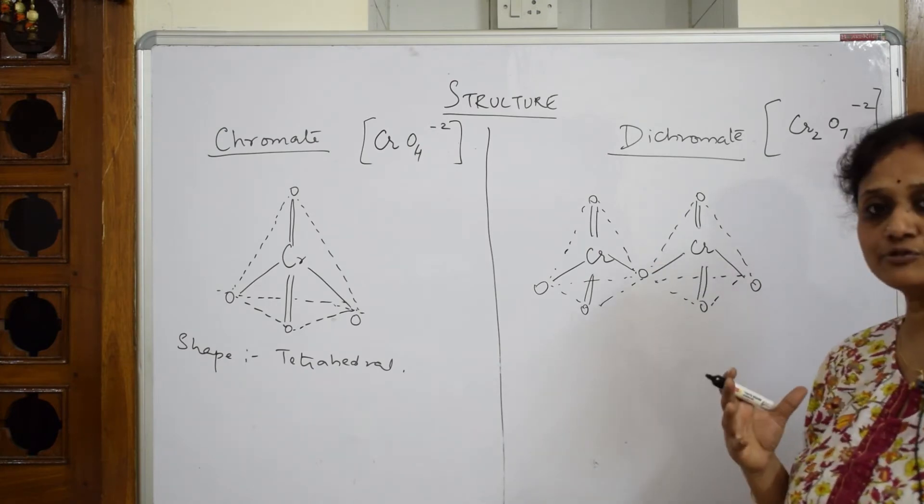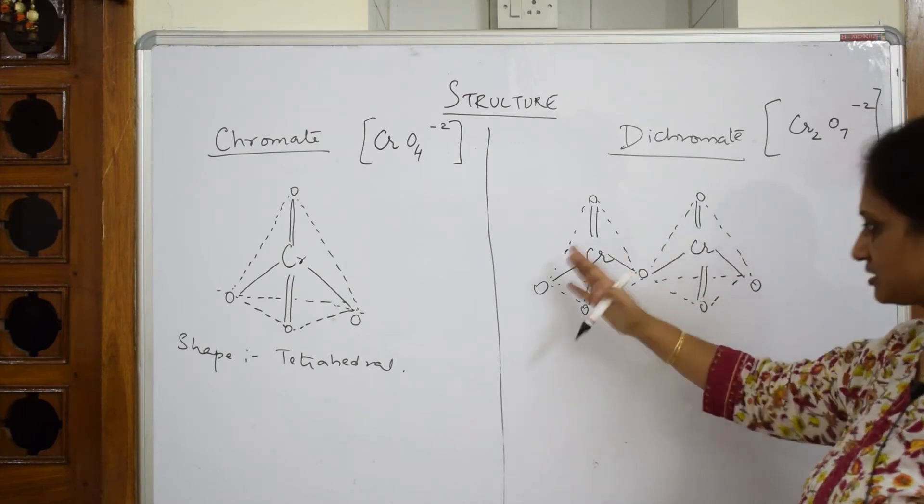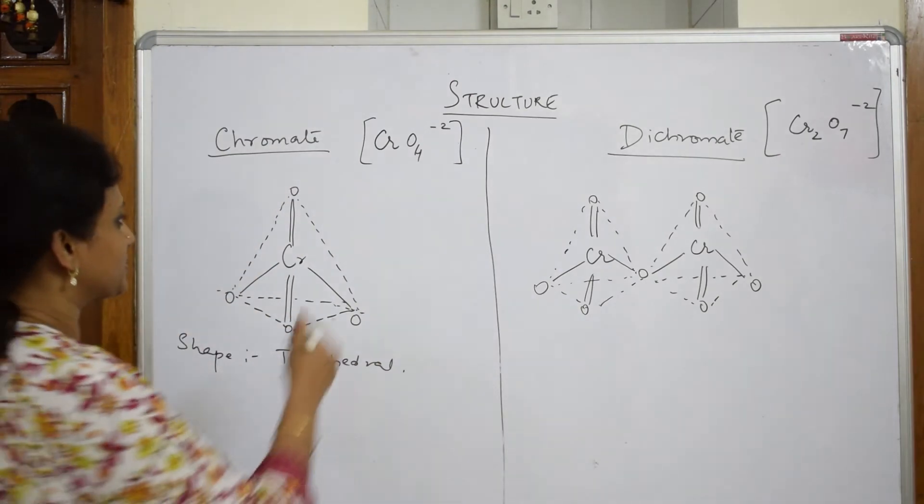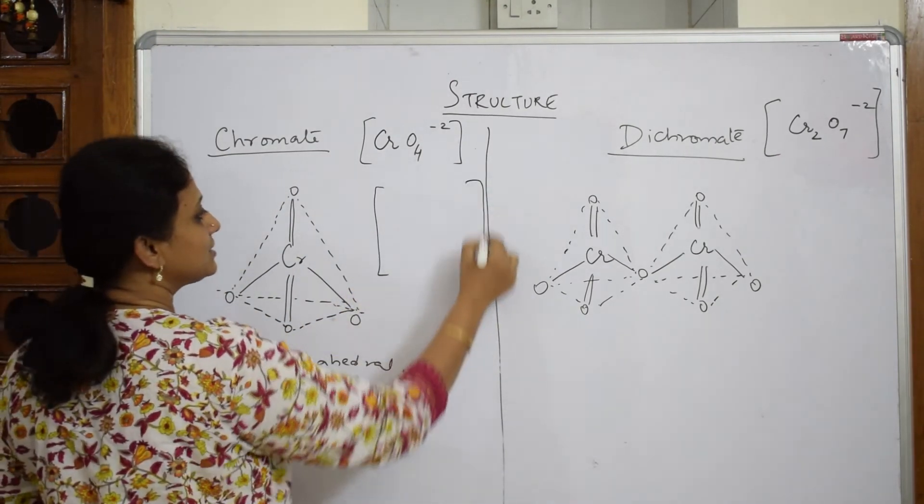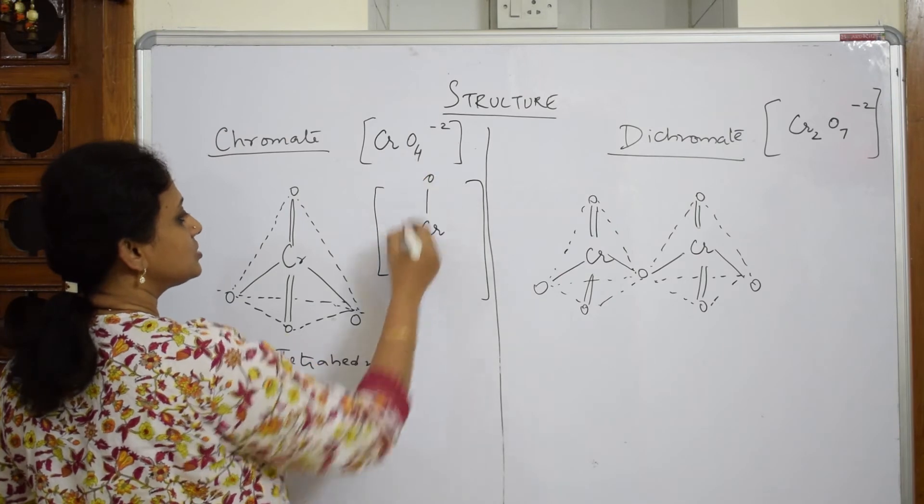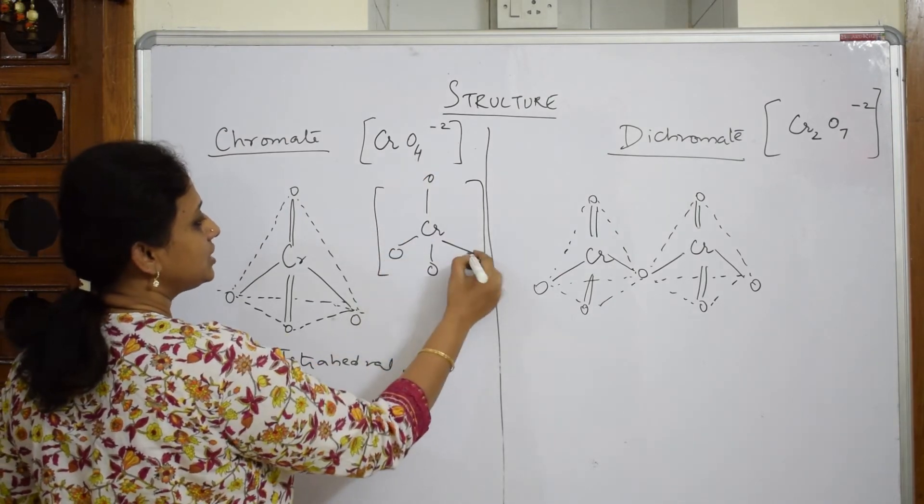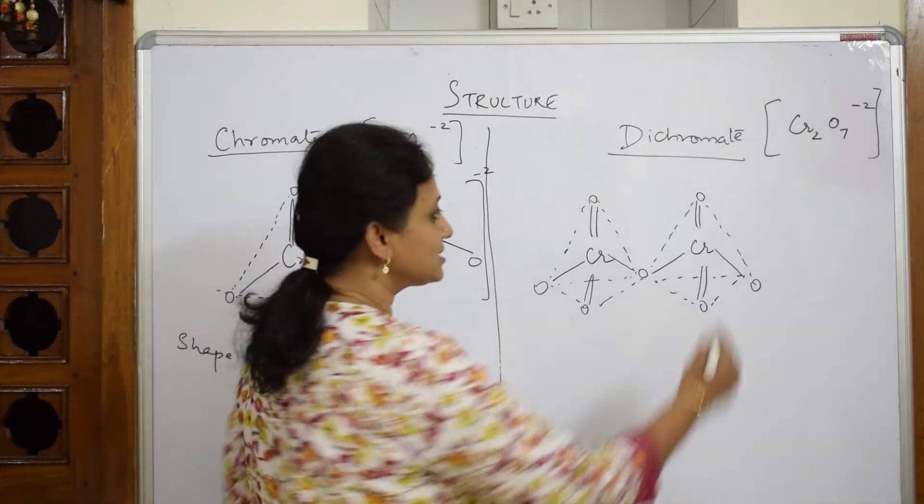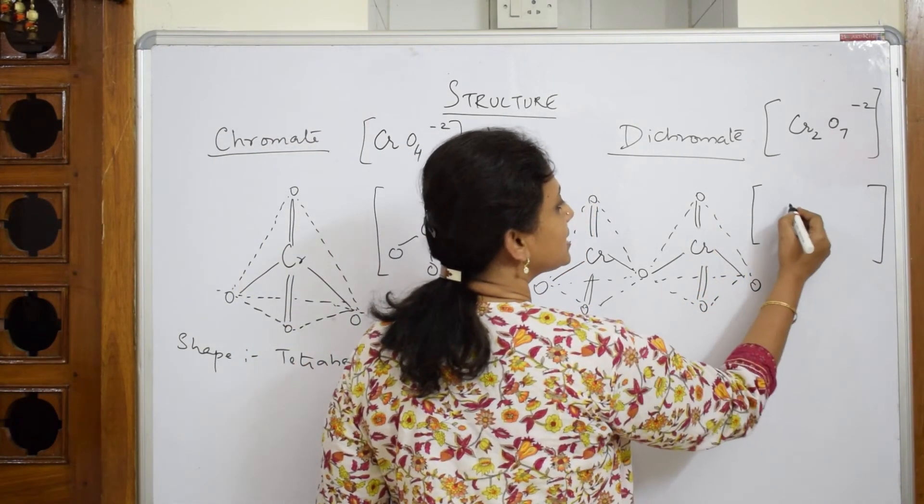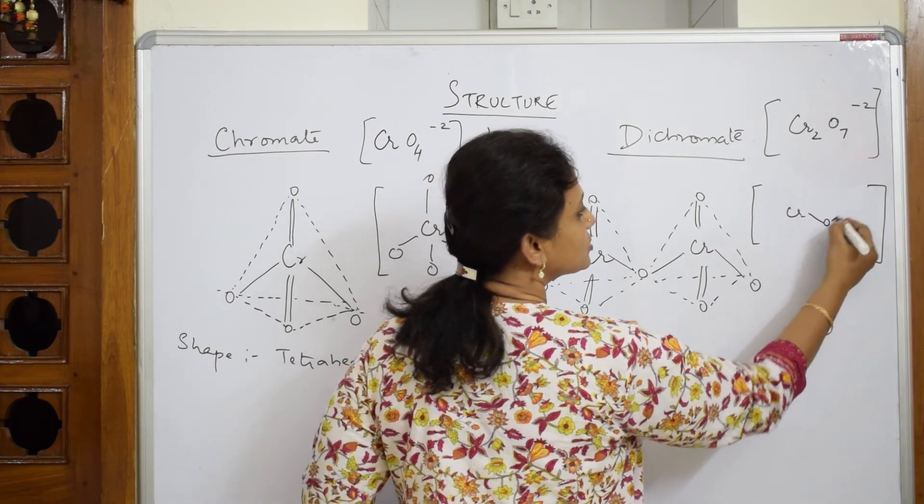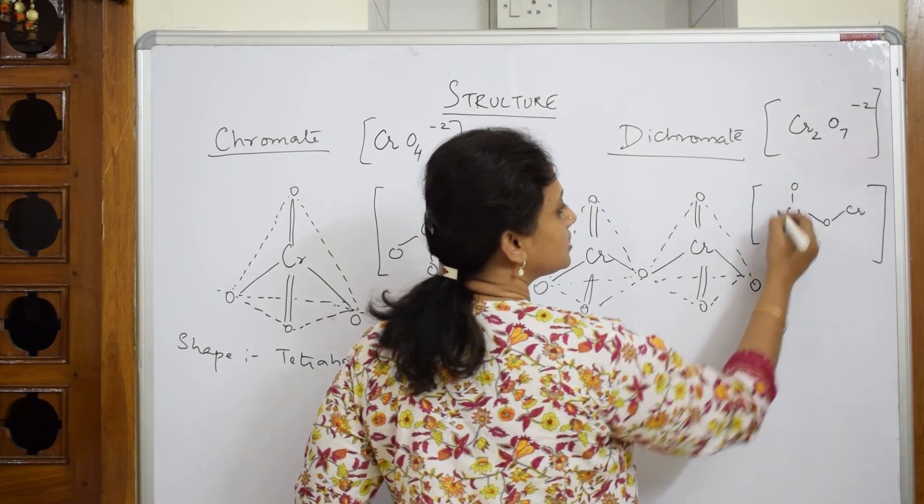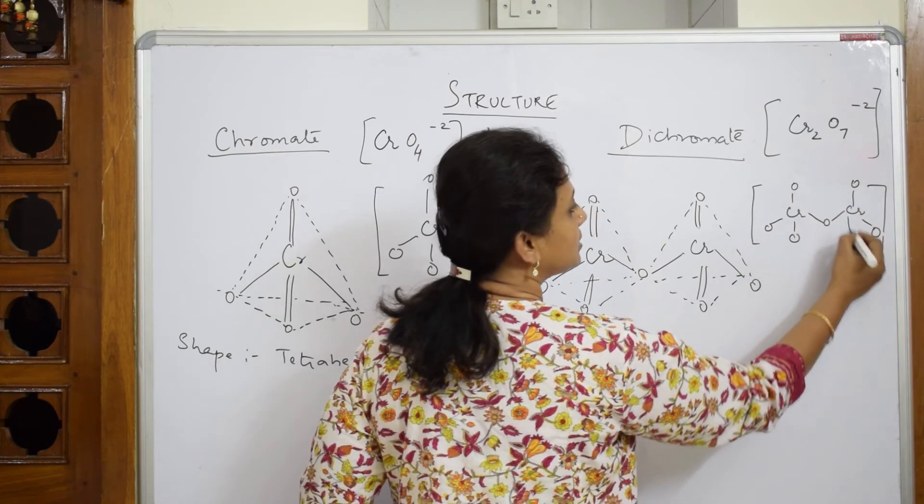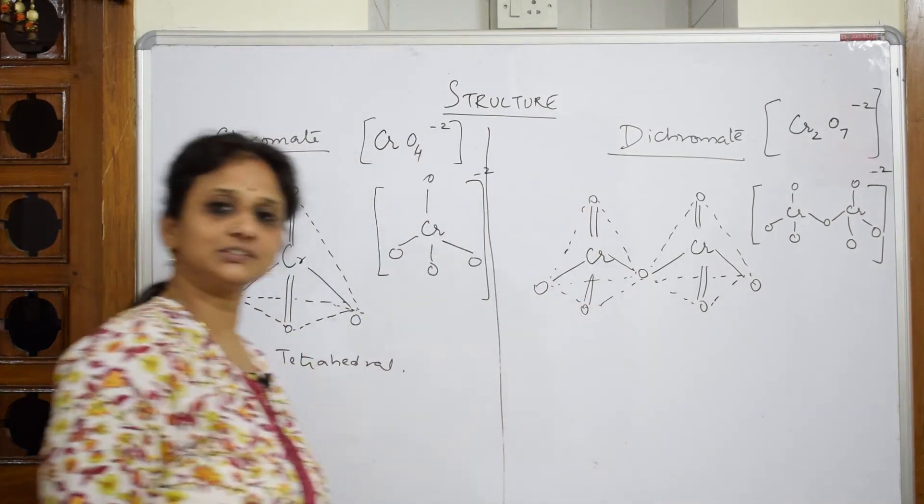Now when I have to see, this is also tetrahedral but arranged in the form of a dimer. And then I have to write the structure without bonds, simple representation. You can also write like this. Make Cr, so 1 oxygen, 2, 3, 4, minus 2. Then when I have to write the structure, how does this look like? It looks like Cr linked with oxygen, one more Cr, 1, 2, 1, 2, 3, 3, minus 2. So this is the dichromate ion.